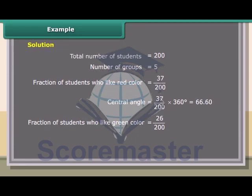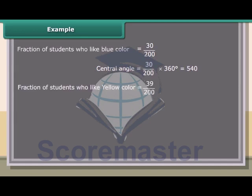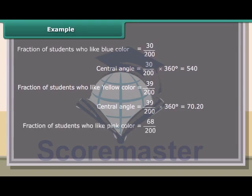Fraction of students who like blue color = 30/200; central angle = (30/200) × 360° = 54°. Fraction who like yellow = 39/200; central angle = (39/200) × 360° = 70.20°. Fraction who like pink = 68/200; central angle = (68/200) × 360° = 122.40°.